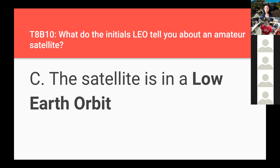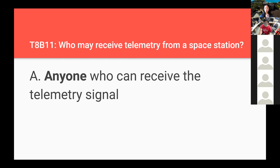What do the initials LEO tell you about an amateur satellite? The satellite is in a low Earth orbit — L-E-O, low Earth orbit. Who may receive telemetry from a space station? Anyone who can receive the telemetry signal — if you're curious how the PolySat satellites are doing, you can just build an antenna and point it at the sky.